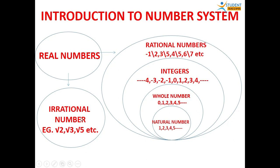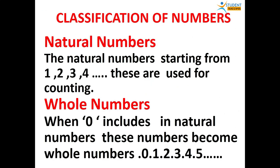When we combine irrational numbers and rational numbers, we get real numbers. Why are these numbers known as real numbers? Because we can plot these numbers on the number line. That is why they are called real numbers. Next is a quick recap of these definitions.